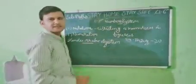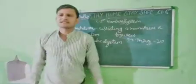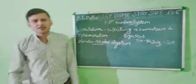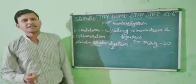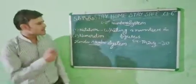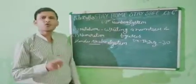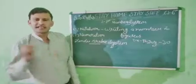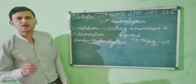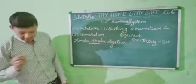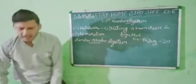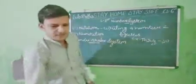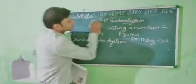Next question: Hindu Arabic system. In the Hindu Arabic system, we use the number system 0, 1, 2, 3, 4, 5, 6, 7, 8, 9, and then 10. Now let's move to exercise one.